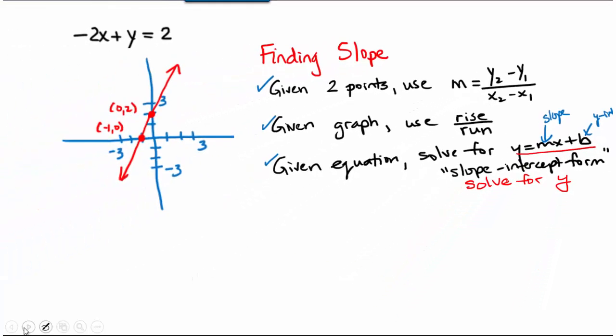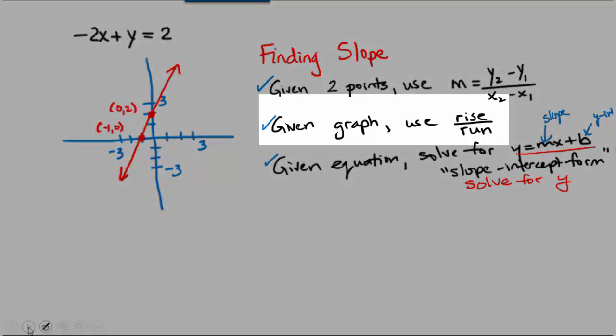Let's analyze the line we've already graphed, negative 2x plus y equals 2, using all three of these techniques to find the slope. We should find that we get the same slope, no matter which of the three techniques we use.